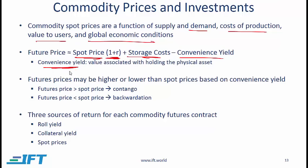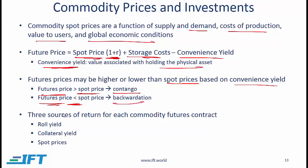The convenience yield is the benefit or value associated with holding a physical asset. Futures prices may be higher or lower than spot prices based on the convenience yield. If the futures price is greater than the spot price, the market is said to be in contango. If the futures price is less than the spot price, the market is in backwardation. With futures contracts there are three sources of return: roll yield, collateral yield and spot prices — so if spot prices go up, the spot price yield will be positive.